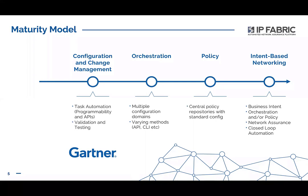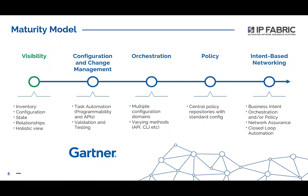This is a great model to show how an organization might approach the introduction of network automation into their operational processes. But there's always a caveat — there's an assumption that you have an understanding of the network in the first place to make all this work. For that reason, we add an extra stage: providing visibility across the network. By visibility, we mean automatically collecting inventory, configuration and state data from across the whole network, so we're able to map out the relationships between network nodes and domains and gain a holistic view of the operation of the network. Once you have this level of visibility, that deep rich data can educate all of the subsequent phases.